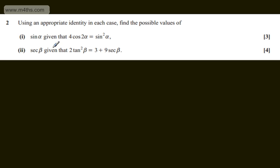This is question number two. Using an appropriate identity in each case, find the possible values of: for 3 marks, sin α given that 4cos2α equals sin²α, and for 4 marks, sec β given that 2tan²β equals 3 plus 9sec β.